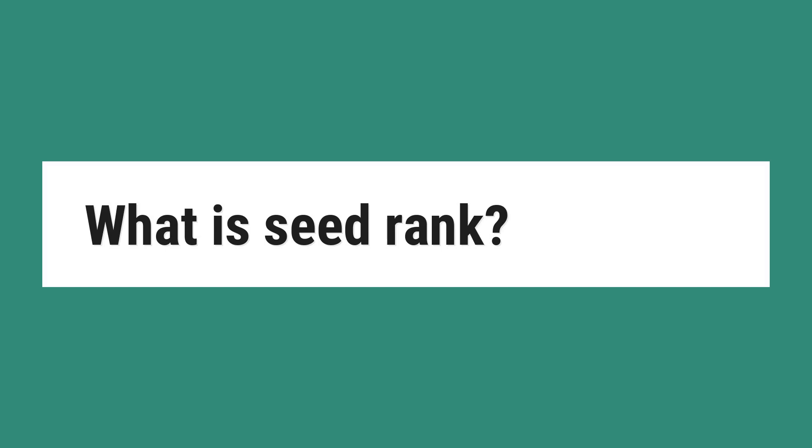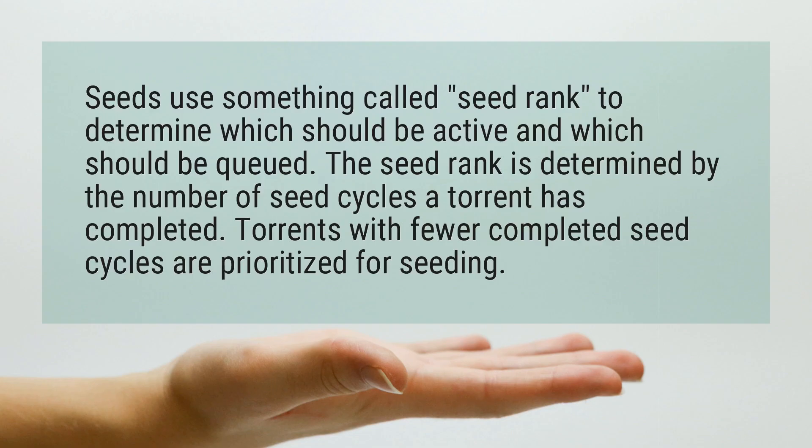What is seed rank? Seeds use something called seed rank to determine which should be active and which should be queued. The seed rank is determined by the number of seed cycles a torrent has completed. Torrents with fewer completed seed cycles are prioritized for seeding.